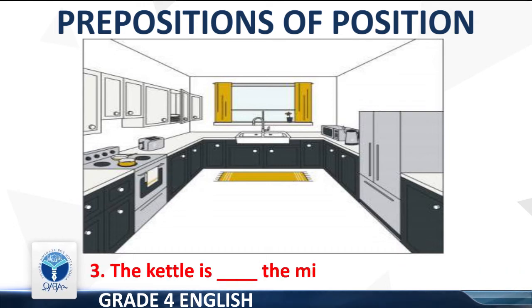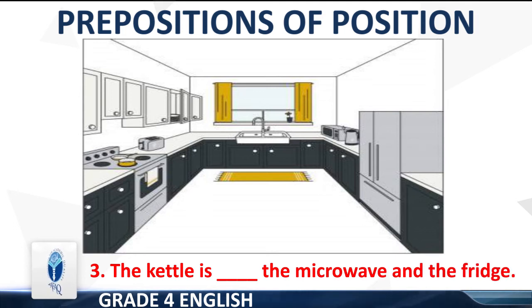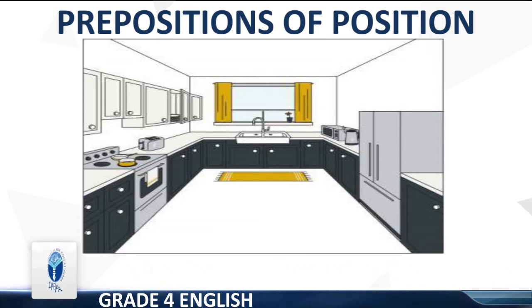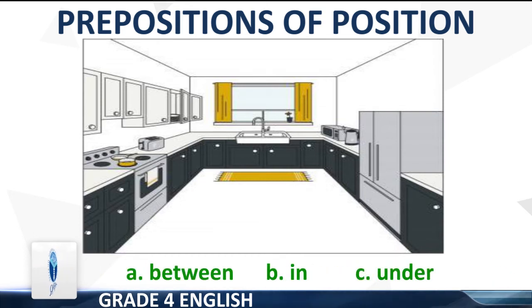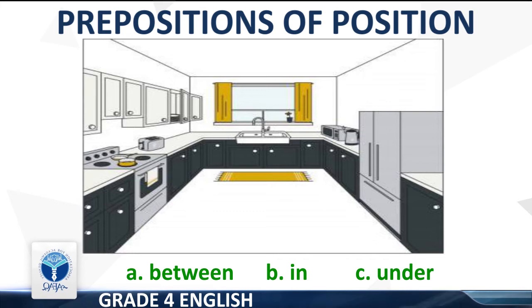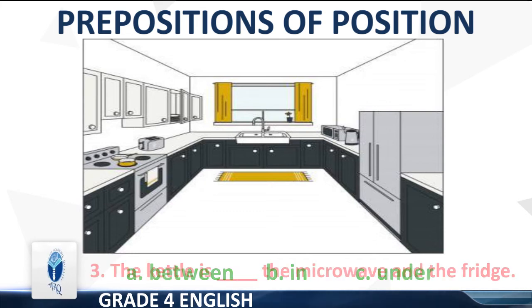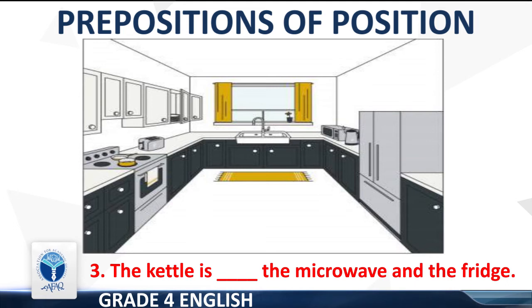Point 3: The kettle is dash the microwave and the fridge. Options: A — between, B — in, C — under. The right option is 'between'. The sentence will be: the kettle is between the microwave and the fridge.